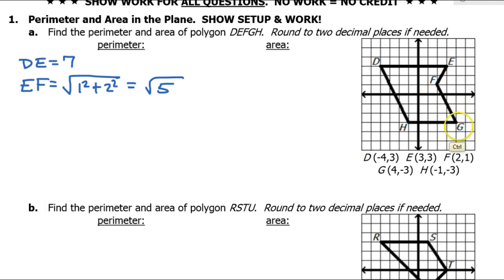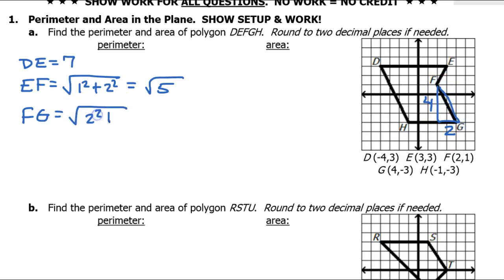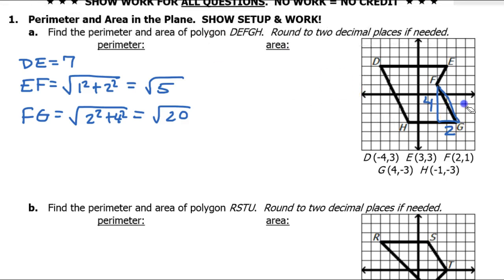Next I want to find the length of FG. Again I will make a right triangle out of it. The horizontal is 2 and the vertical is 4. So the hypotenuse will be the square root of 2 squared plus 4 squared — that's 16 plus 4, that's 20, so the square root of 20. HG is a horizontal line so I can just count — that's 4 and 1, so that's simply 5.